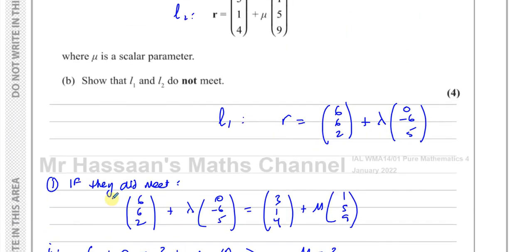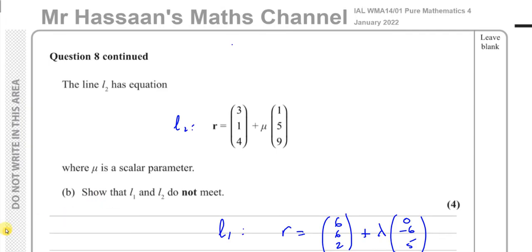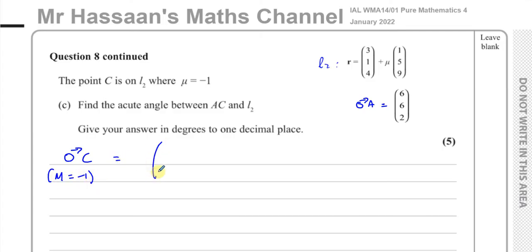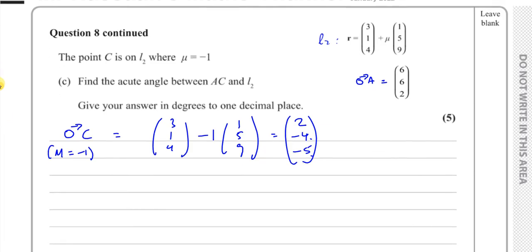That's the answer to part B. Now for part C: the point C is on line L2 where mu = -1. We need to find the acute angle between AC and line L2. First, let's find the position vector of C. Substituting mu = -1 into the equation of L2: (3, 1, 4) + (-1)(1, 5, 9) = (3-1, 1-5, 4-9) = (2, -4, -5). So C has position vector (2, -4, -5).